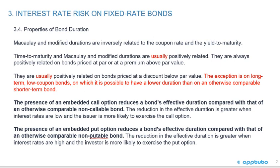The exception — highlighted in bold in red — is on long-term, low-coupon bonds, on which it is possible to have a lower duration than on an otherwise comparable shorter-term bond. For CFA questions, you're always looking for exceptions — that's what you can be tested on.